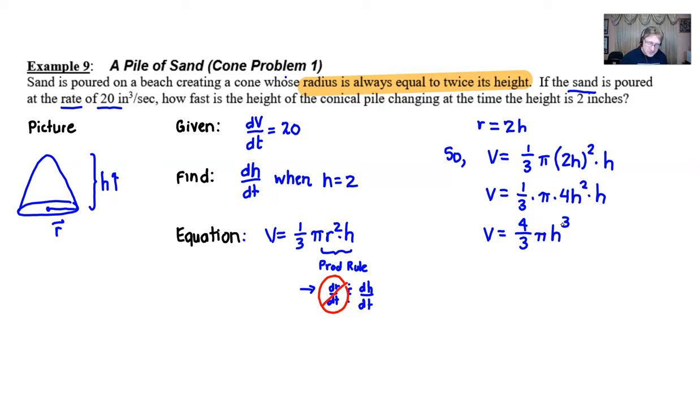Now you really have a very easy derivative to take with respect to t. Things are pretty smooth sailing from this point. If we take the derivative with respect to t, dV/dt would equal, bring the three in front, the threes would cancel, you get 4 pi h squared and then we multiply by dh/dt.